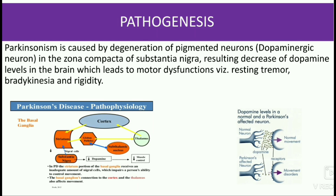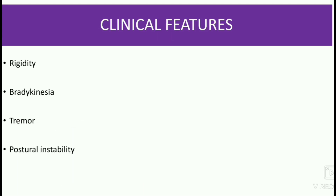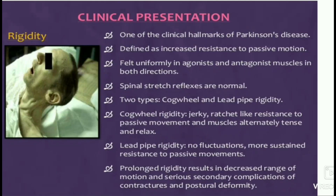The dopamine levels in a normal person and a Parkinson's-affected person are shown in the diagram. The clinical features are rigidity, bradykinesia, tremor, and postural instability. Rigidity is one of the clinical hallmarks of Parkinson's disease, defined as increasing resistance to passive motion felt uniformly in agonist and antagonist muscles in both directions. Spinal stretch reflexes are normal.